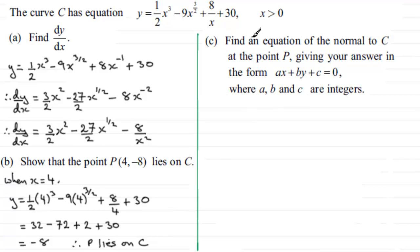In part C, we need to find an equation of the normal to curve C at point P, in the form ax + by + c = 0, where a, b, and c are integers. First, I need to find the gradient of the curve at point P. Substitute x = 4 into dy/dx, which gives the gradient of the tangent at P.